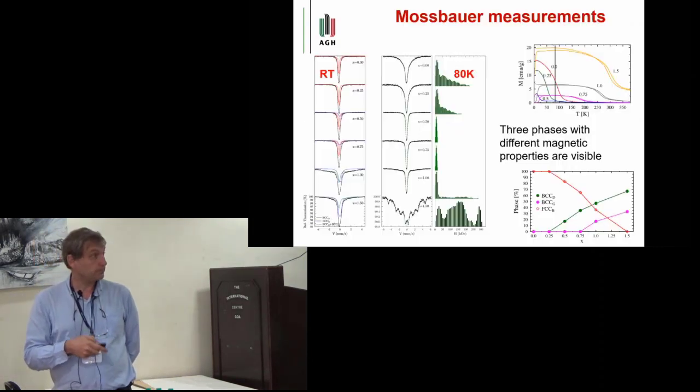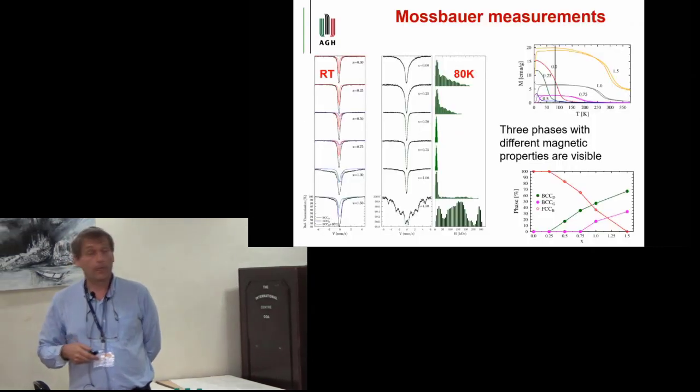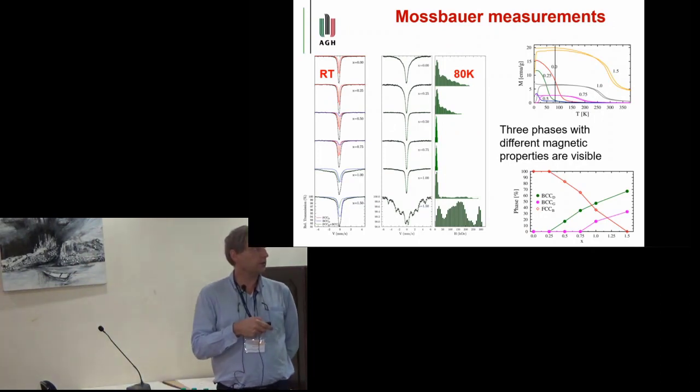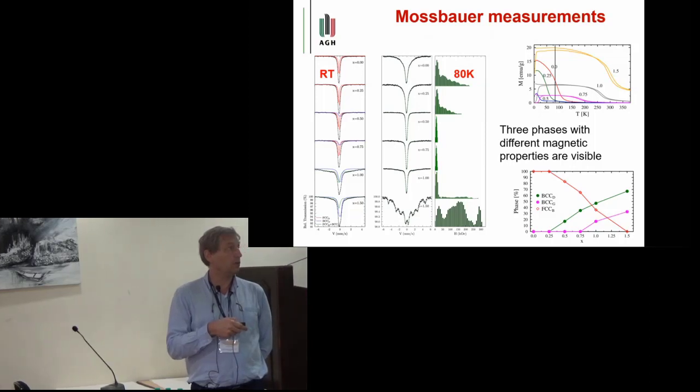Now Mössbauer measurements. Mössbauer measurements performed at room temperature are presented on this series. At the beginning, for low aluminum content, we have a doublet, then something appears here marked by blue. For the last two samples, we are observing also magnetic splitting of the spectra.